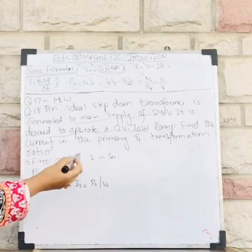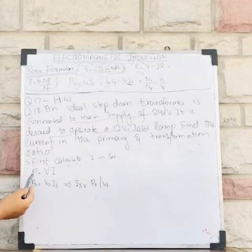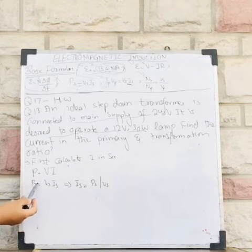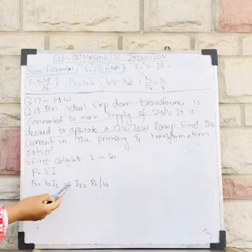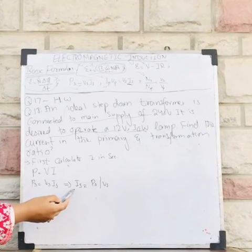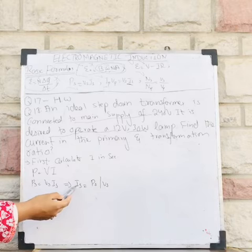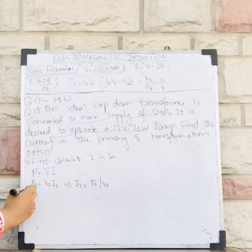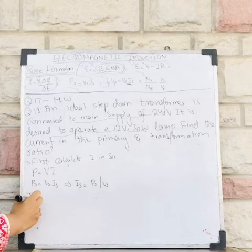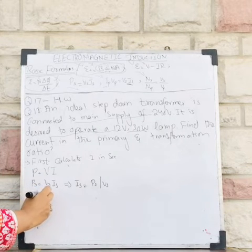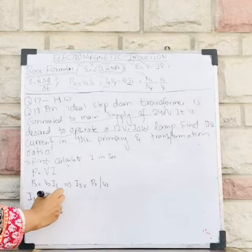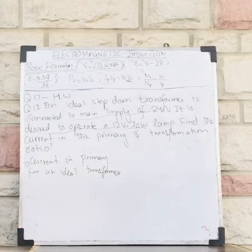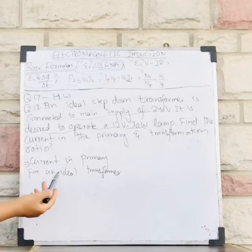First, I should find the secondary current Is. I know that Ps equals Vs times Is. Rearranging for Is: Is = Ps divided by Vs. Putting in values: Is = 30 divided by 12, which equals 2.5 amperes.